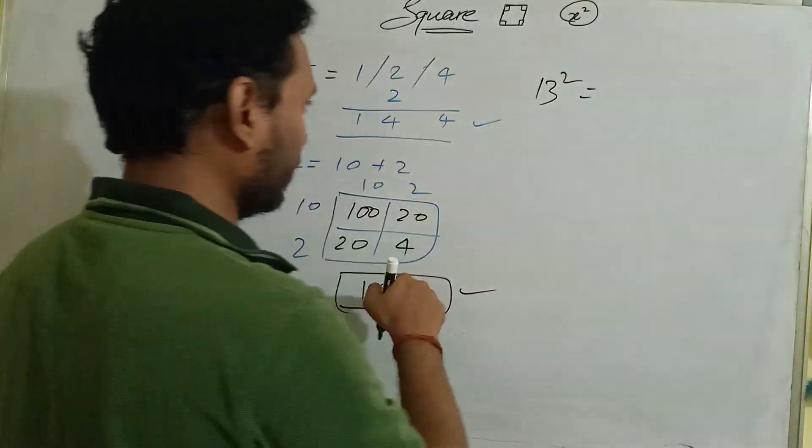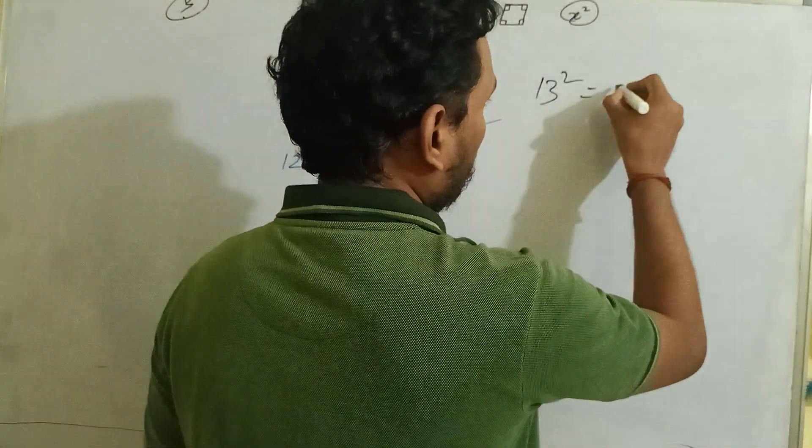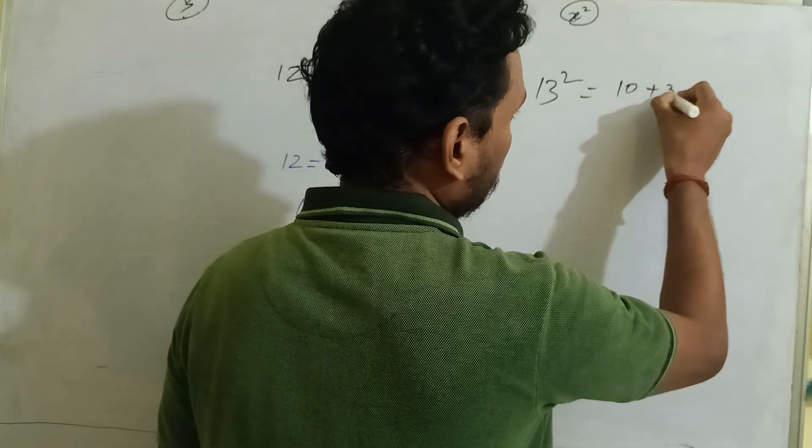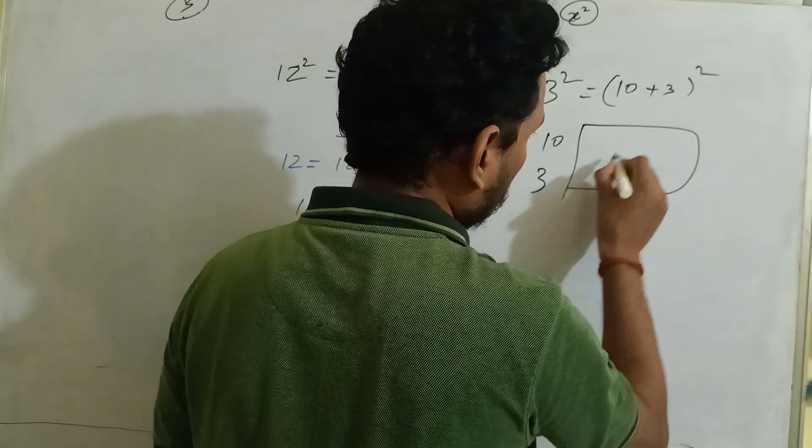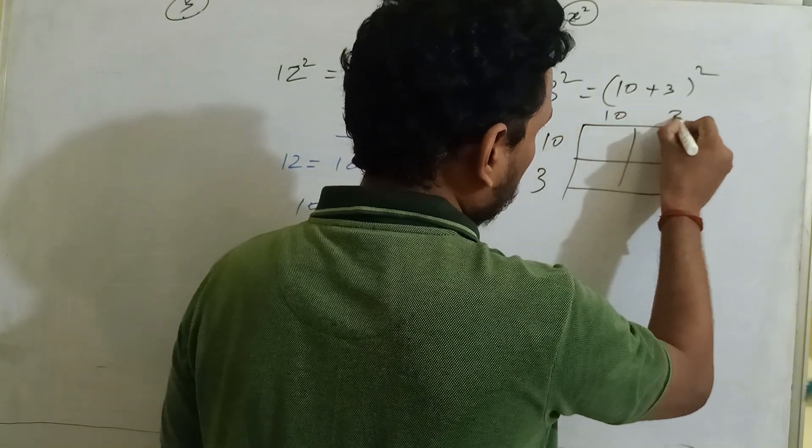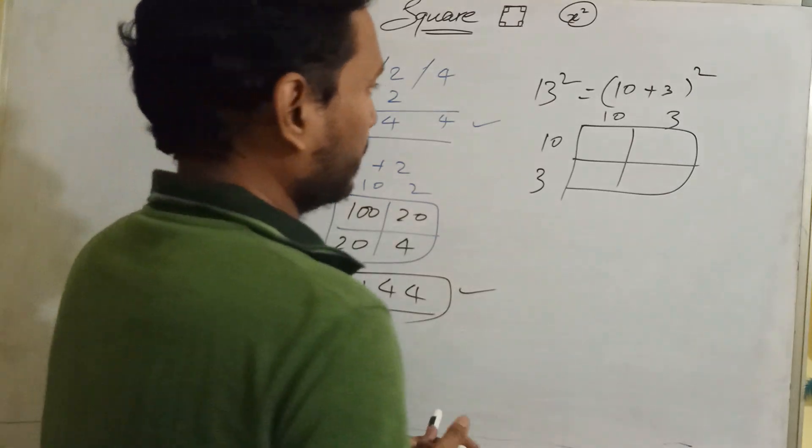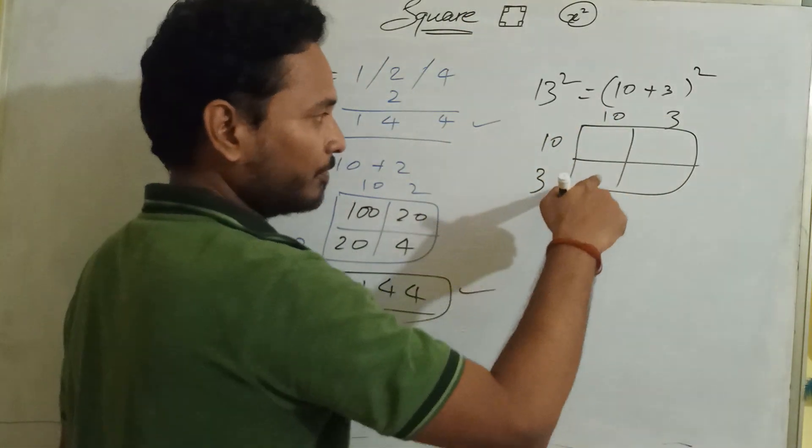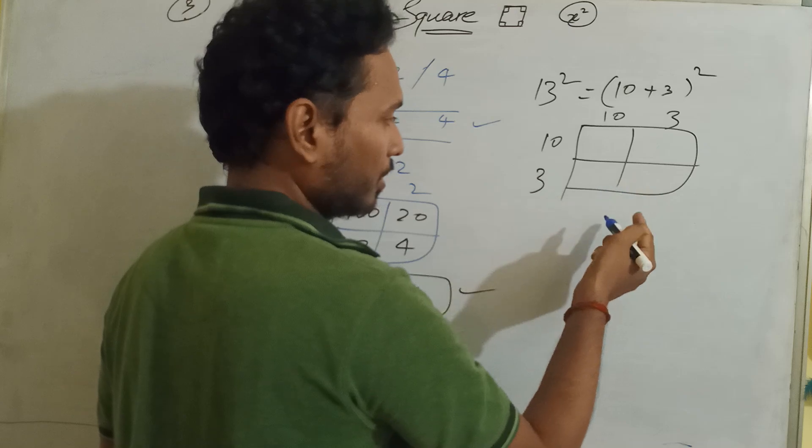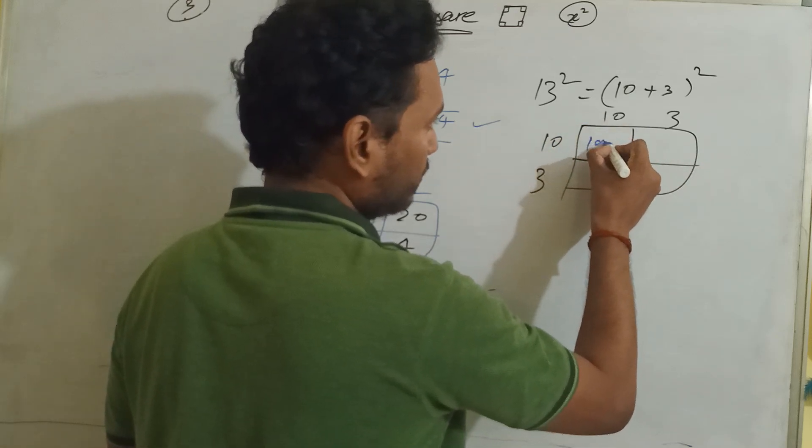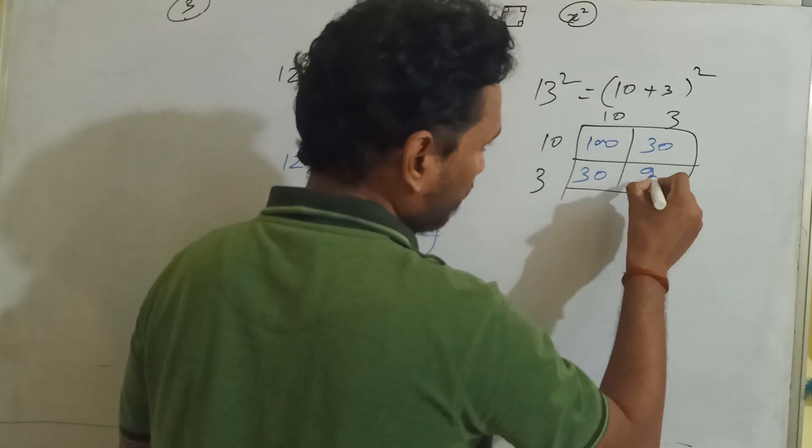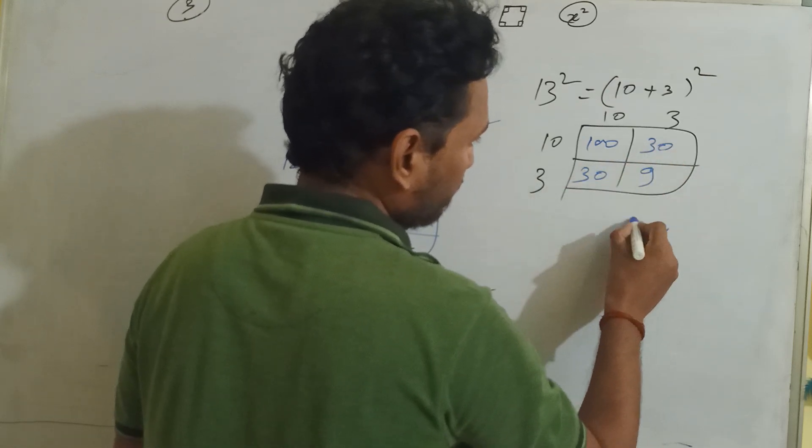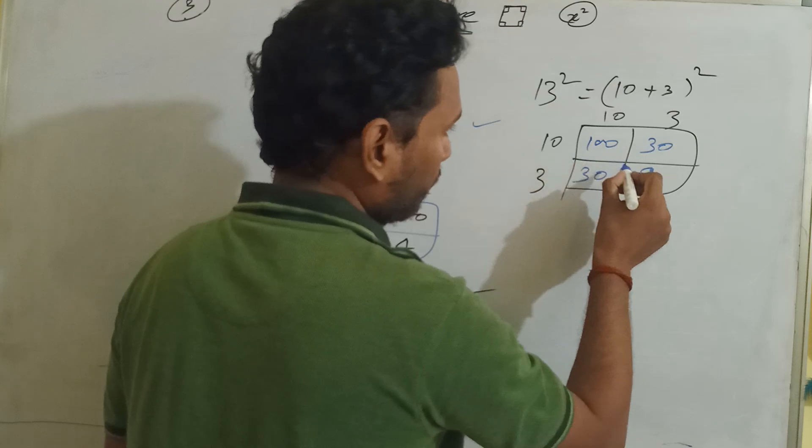Now find out the square with the help of this method. We can write this number as 10, 3, 10, 3. What will be the square? After multiplication, when we will add it, then we can get the result. 10×10=100, 3×10=30, 3×10=30, 3×3=9. Add it.